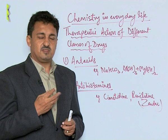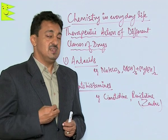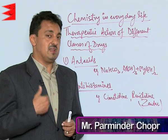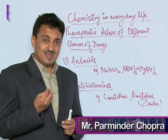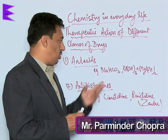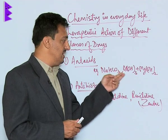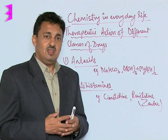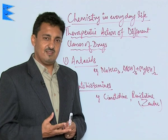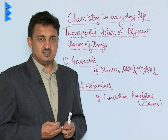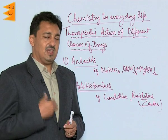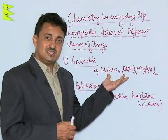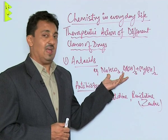Due to some food substances, excess HCl is secreted. That can be cured by taking certain bases like sodium hydrogen carbonate, aluminium hydroxide, and magnesium hydroxide mixtures. These neutralize the excess HCl and thus prevent acidity. Hyperacidity is prevented by taking these bases, and these are called antacids.